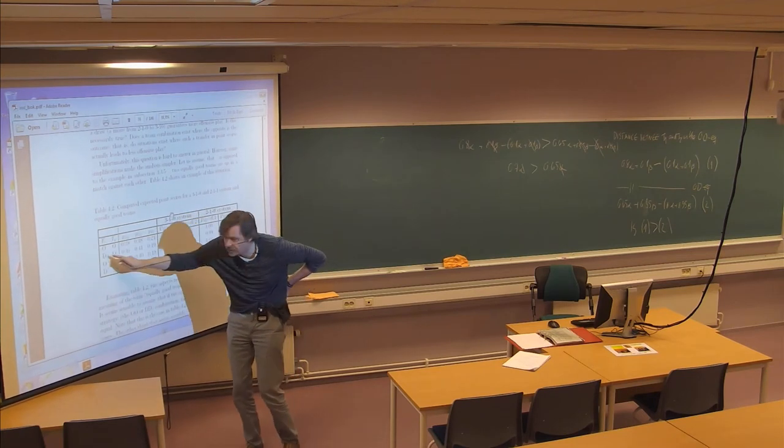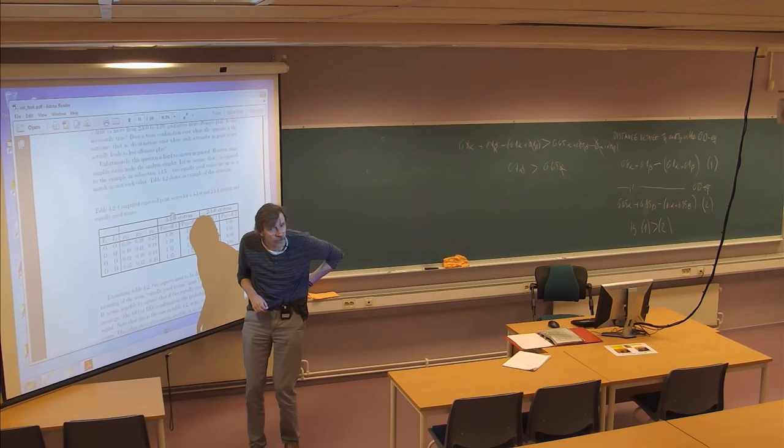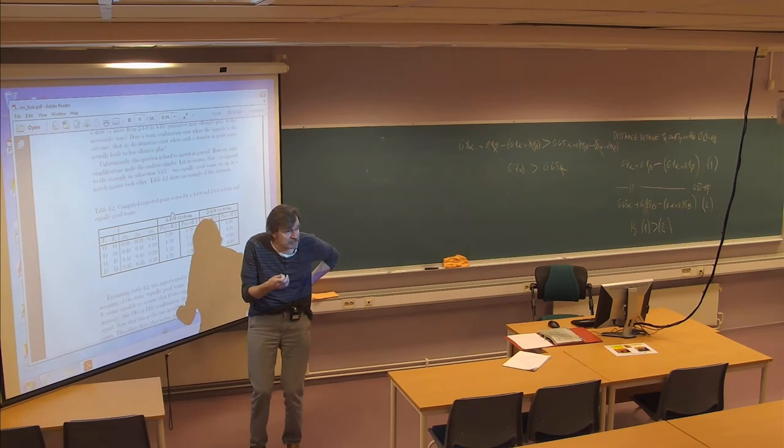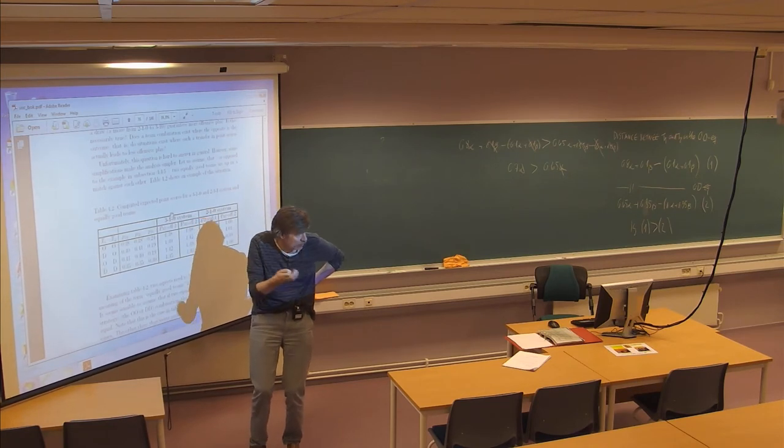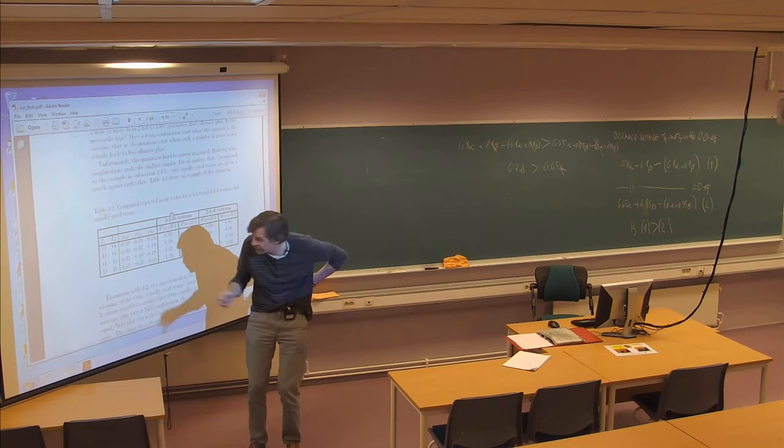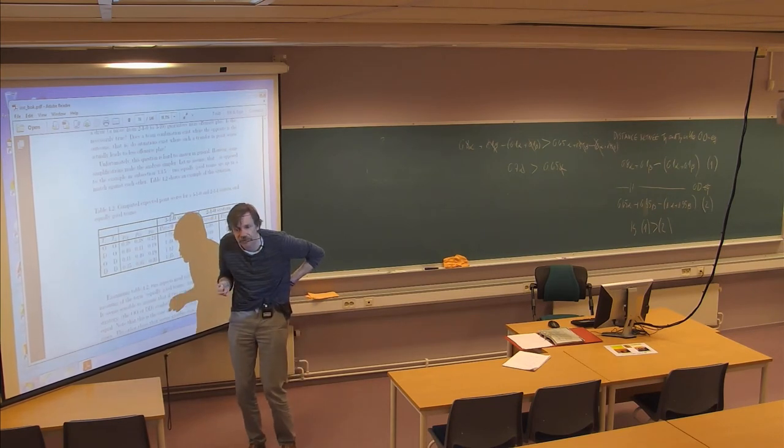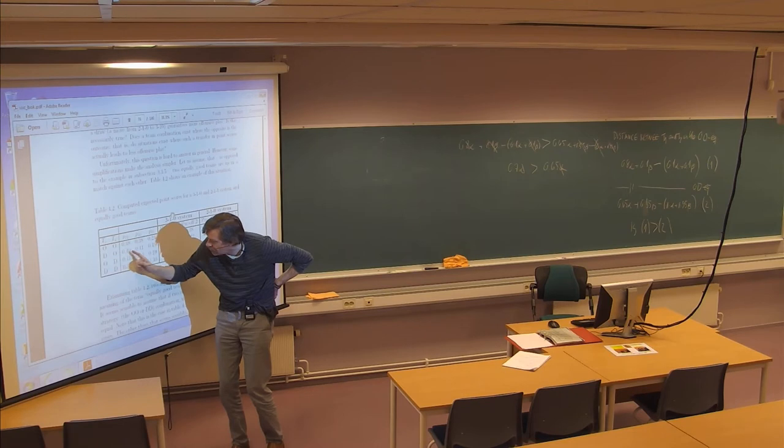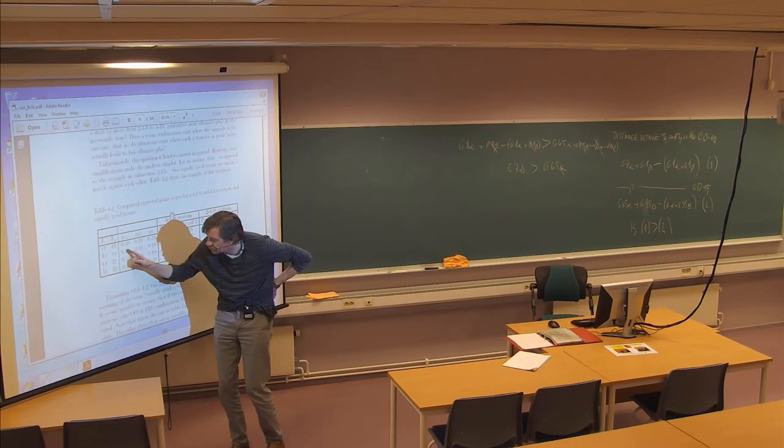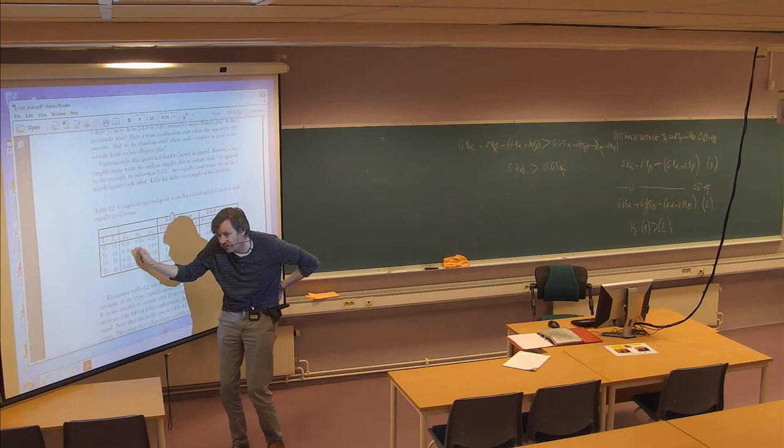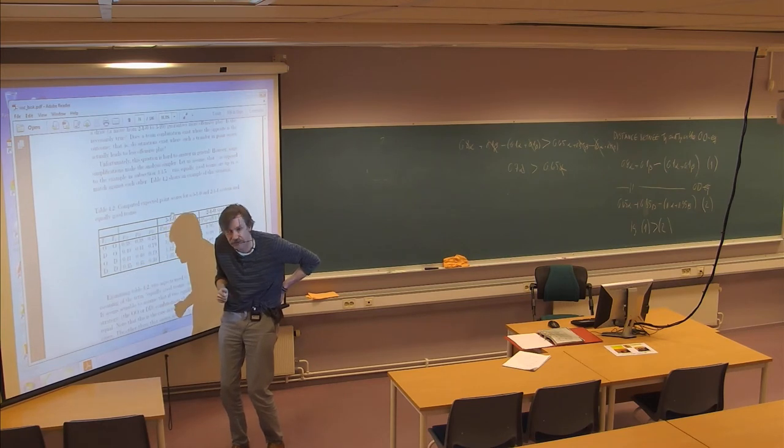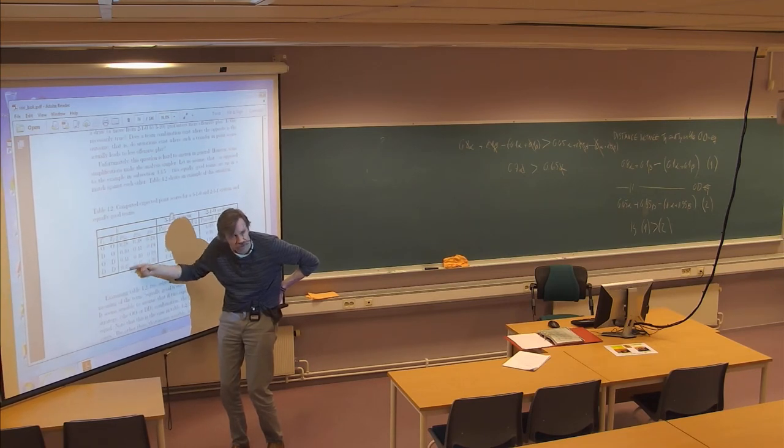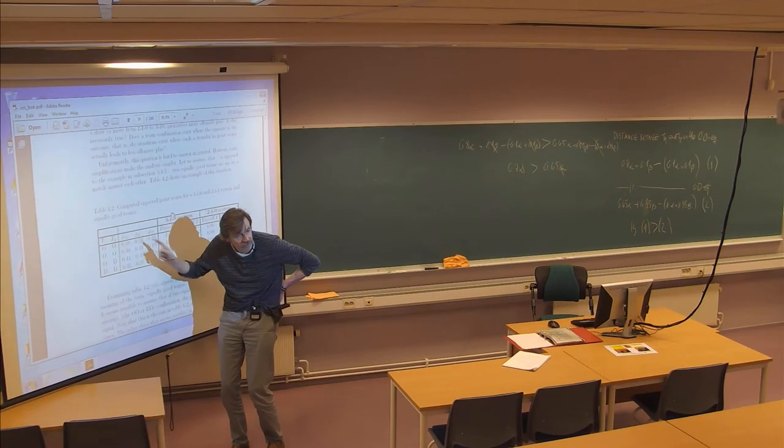If one of the team chooses D and the other O, and we have a set of probabilities for beating each other, then we have to swap or flip that if they change strategy. Because they are the same teams. So these numbers here, their structure defines the fact that we are looking at two equal teams.